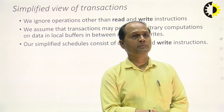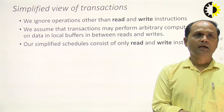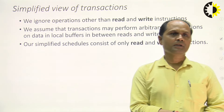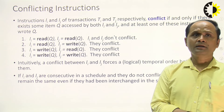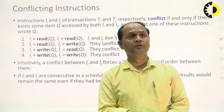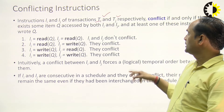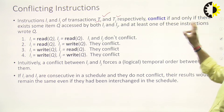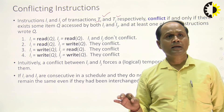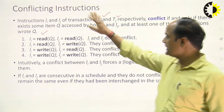In conflict serializability, we calculate the conflict of operations. In a transaction, there are two types of operations: read operation and write operation. We can calculate the conflict of operations in particular transactions. Suppose we have instructions Ii and Ij belonging to transactions Ti and Tj respectively — they conflict if and only if there exists some data item Q accessed by both Ii and Ij.